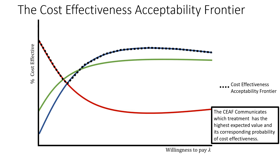Enter the new concept known as the cost-effectiveness acceptability frontier. The frontier communicates which treatment has the highest expected value and its corresponding probability of cost-effectiveness. We'll notice that it too has a kink, because along this line we're choosing the treatment that has the highest expected value, and when that value changes we follow another line.